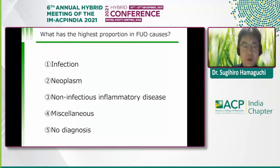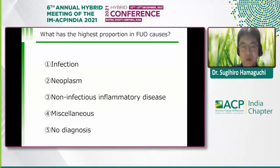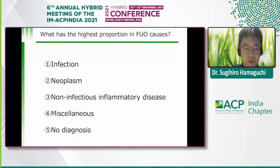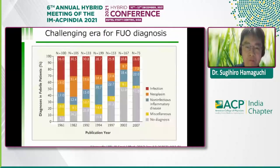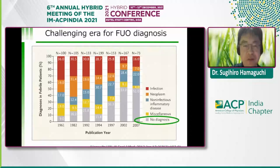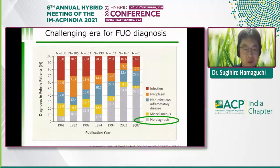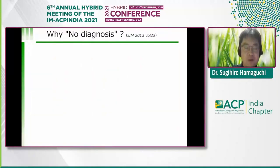I want to ask you: what has the highest proportion in FUO causes — infection, neoplasm, non-infectious inflammatory disease, miscellaneous, or no diagnosis? The answer is no diagnosis. So we are facing a challenging era for FUO diagnosis. Why is no diagnosis so common?